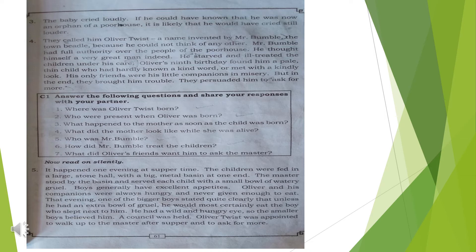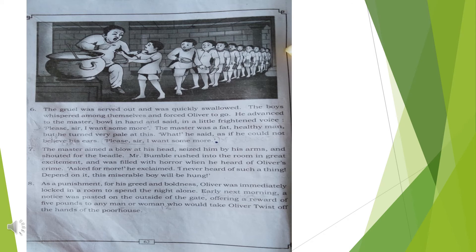Boys generally have excellent appetites. Oliver and his companions were always hungry and never given enough to eat. One of the bigger boys stated quite clearly that unless he had an extra bowl of gruel, he would almost certainly eat the boy who slept next to him — he had a wild and hungry eye. The smaller boys believed him. A council, meaning a meeting, was held among the boys, and they appointed Oliver Twist to walk up to the master after supper and ask for more. So all the boys decided Oliver would go to the master and ask for more gruel.